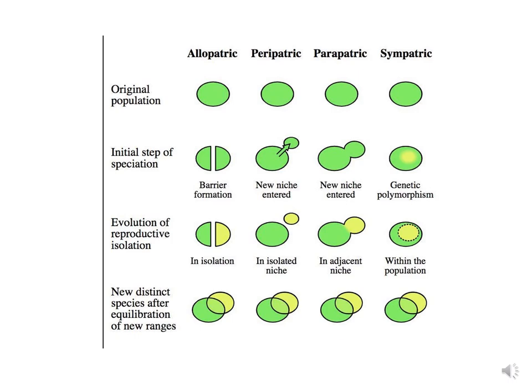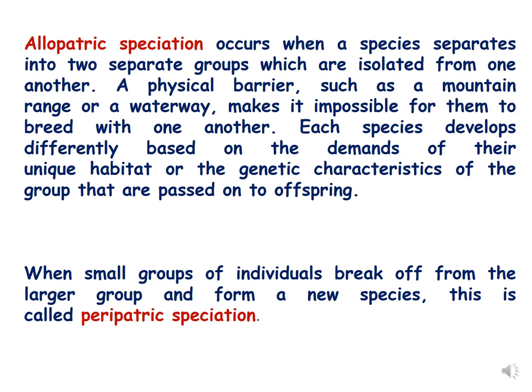Allopatric speciation occurs when a species separates into two separate groups which are isolated from one another due to a physical barrier such as a mountain range or waterway. This barrier makes it impossible for them to breed with one another, and each species develops differently based on the demands of their unique habitat or the genetic characteristics passed on to offspring. Allopatric speciation happens due to physical distance or a barrier which isolates the two populations.